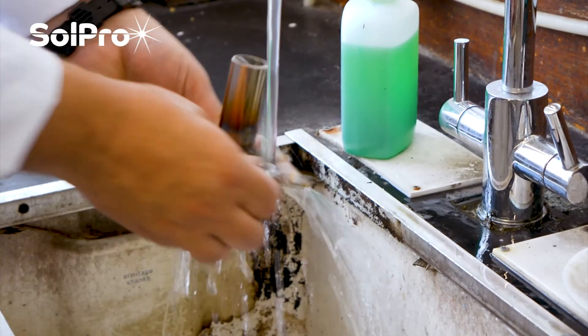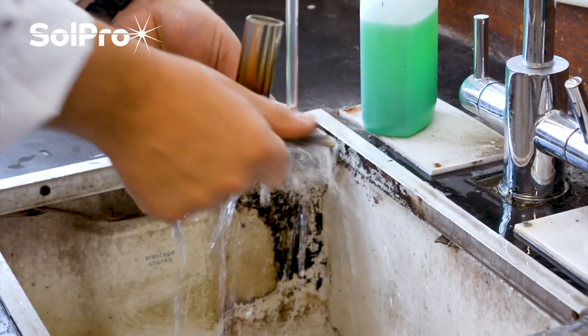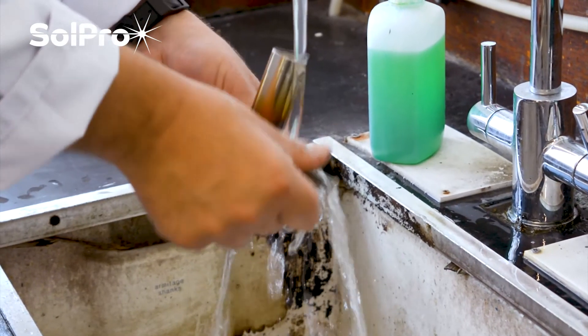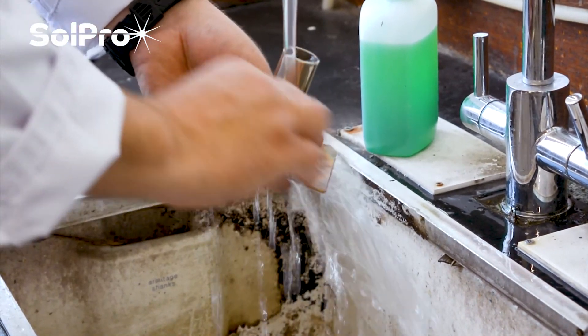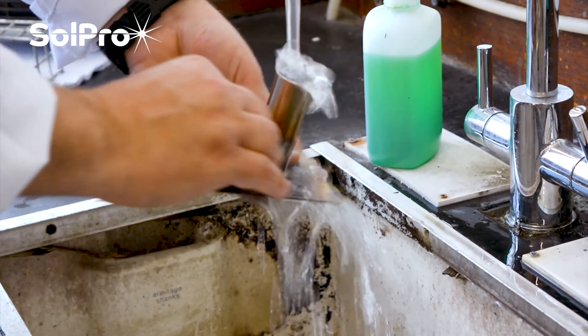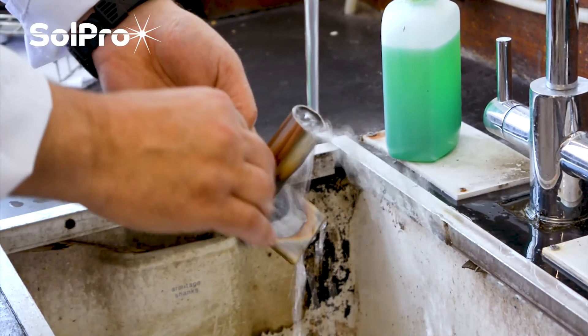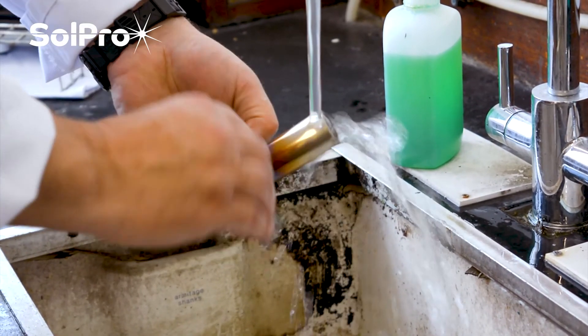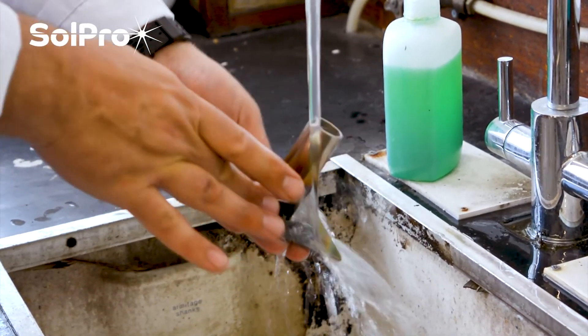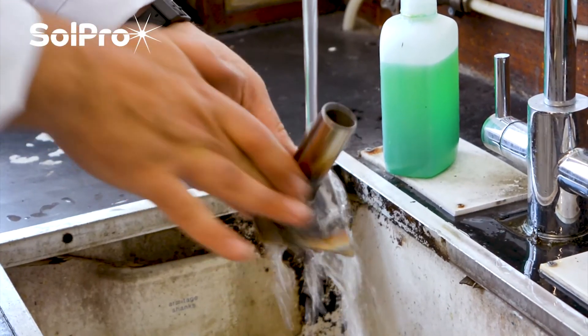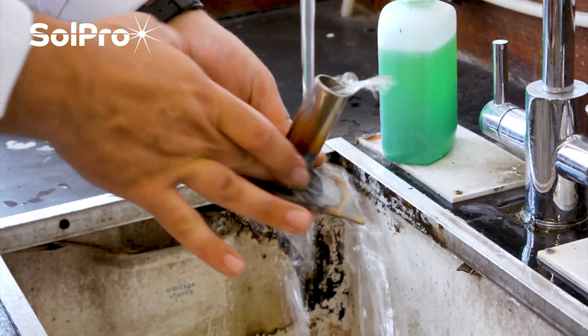We're then going to give it a good rub with a bit of emery just to remove any flux residues. The flux is a chemical cleaner and if we leave that on the joint it will actually start to corrode the joint. So we need to make sure we get rid of all the flux residue. You can use a wire brush, you can use other ways of cleaning it, polishing mops and wire heads on drills and things like that if you really want to. But realistically the joint's sound enough. We just need to get rid of the flux residues and be happy that it's all cleaned off.